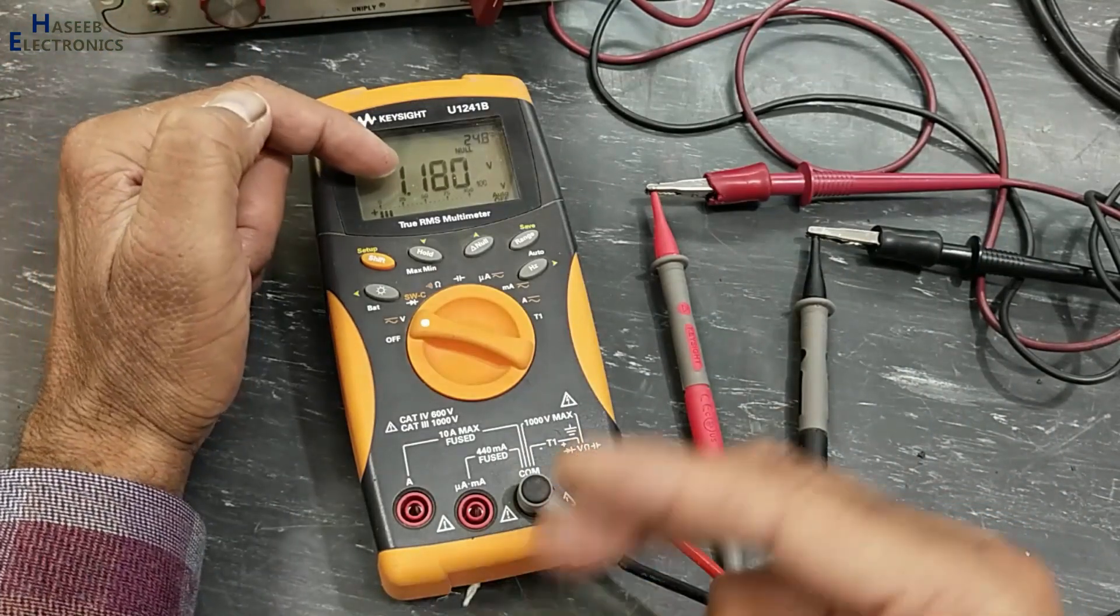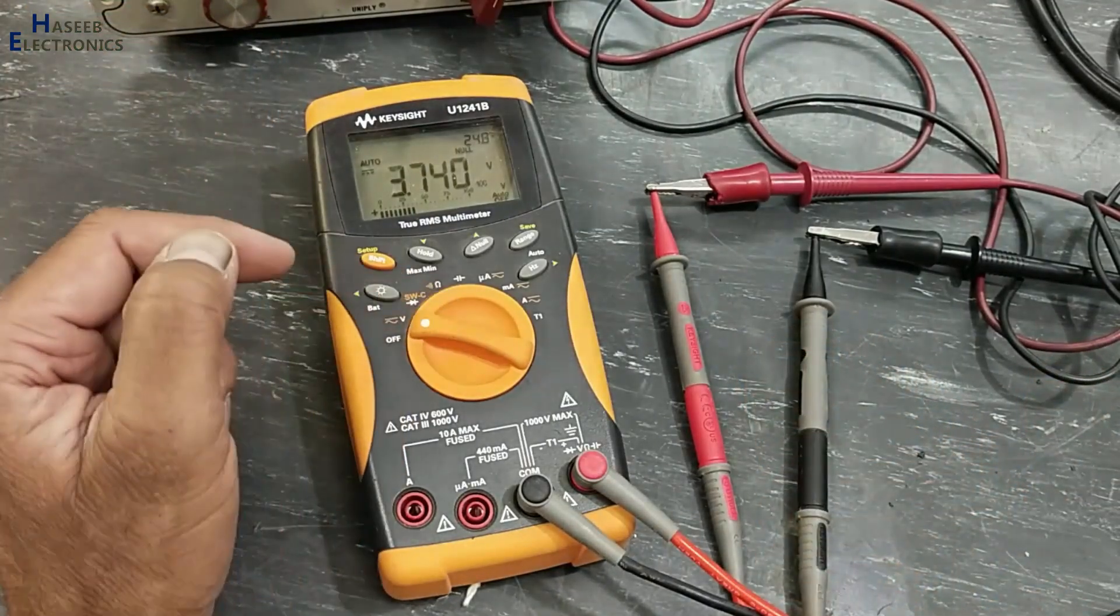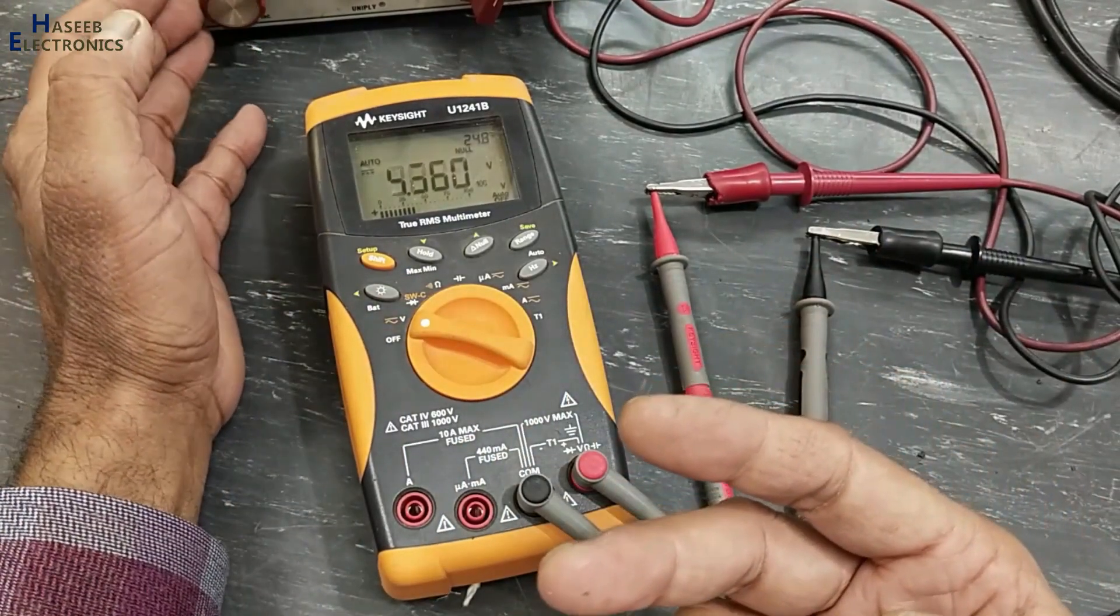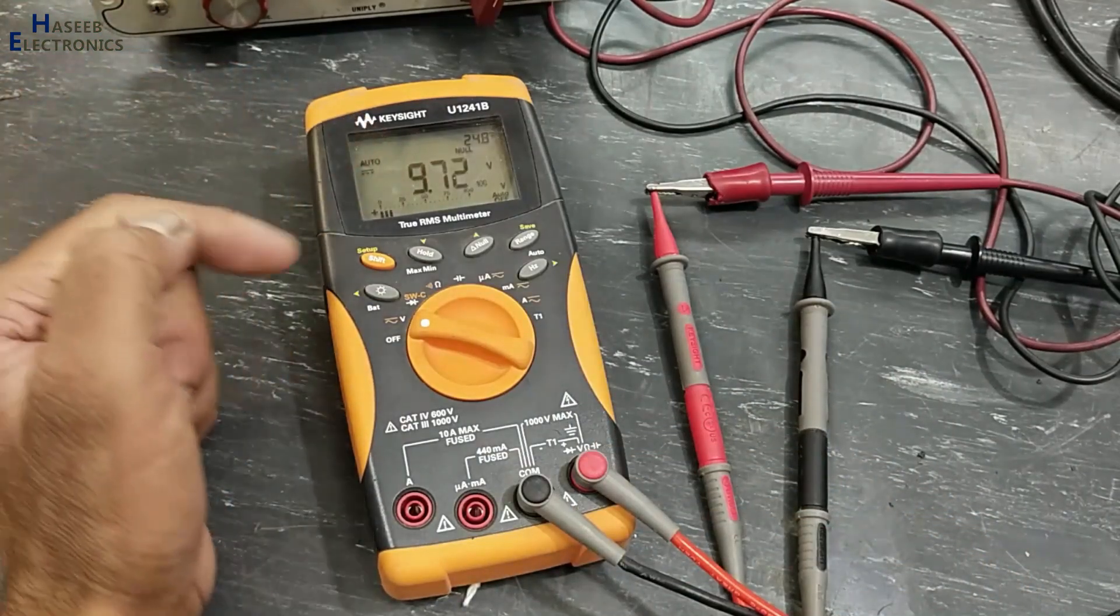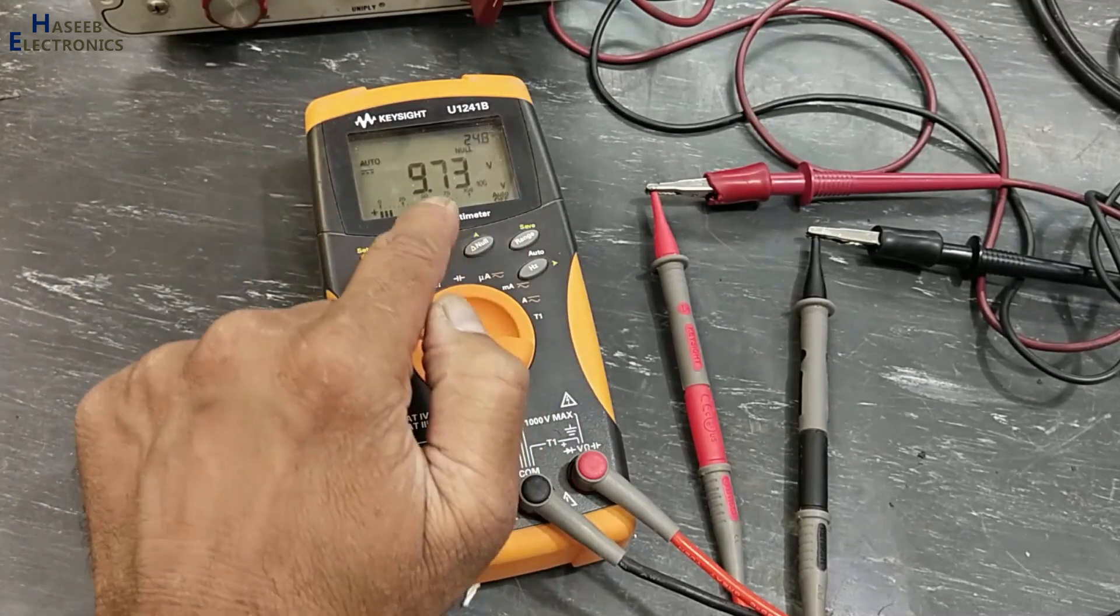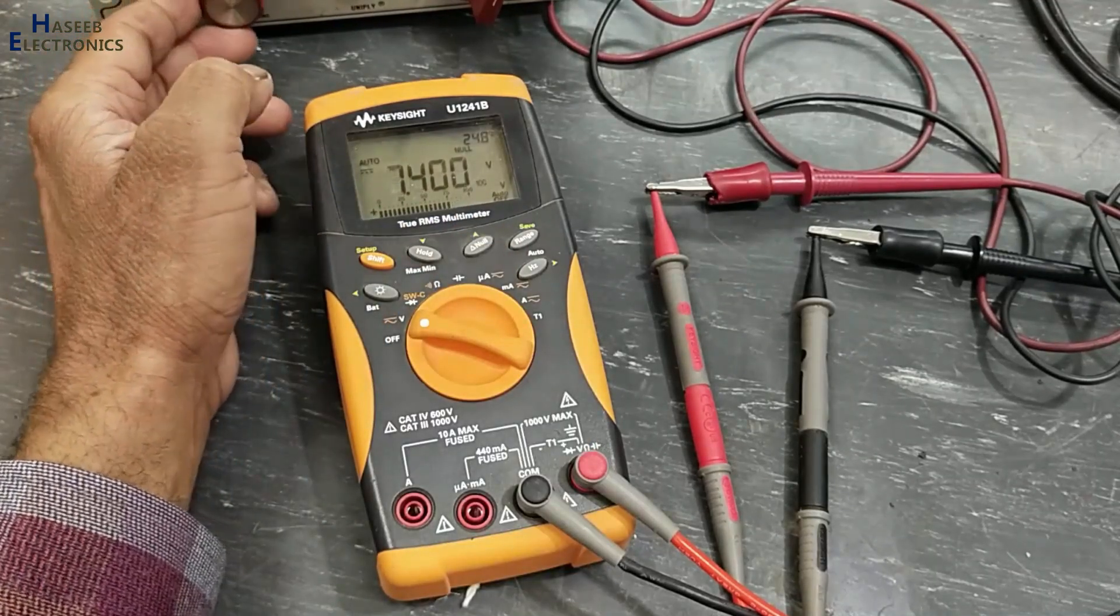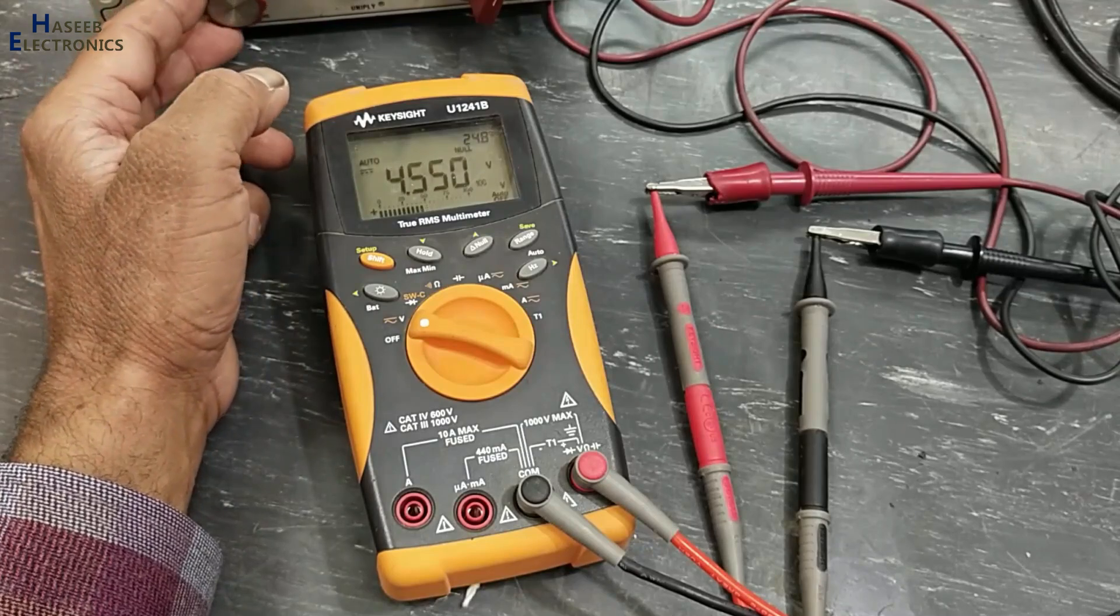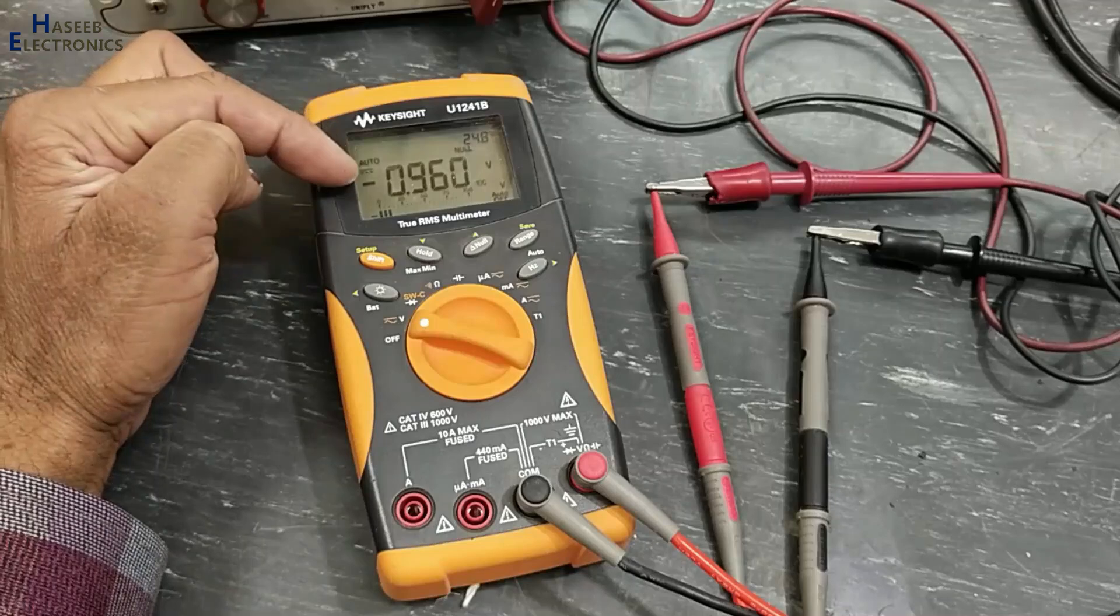1.18 volt increased, 3.7 volt increased, 9.7 volt increased. Basically this time the actual voltage is 29.7. Now if the voltage is decreased from that level, it will show us in minus.